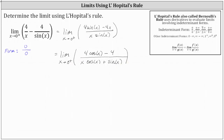Now let's check the form of this limit. As x approaches 0 from the right, 4 cosine x approaches 4 times 1, or 4, and then minus 4, so the numerator approaches 0. In the denominator, x times cosine x approaches 0 times 1, which is 0, and sine x also approaches 0. The limit is still in the form 0/0, which means we can apply L'Hôpital's rule again.